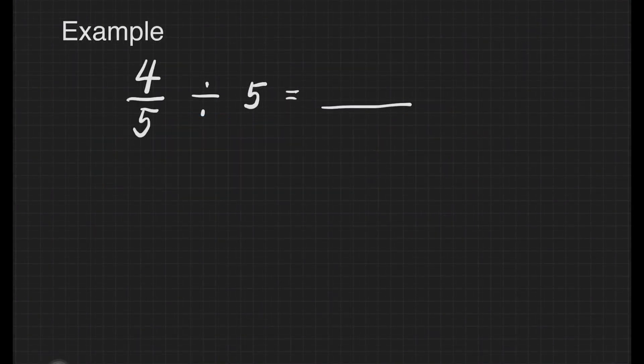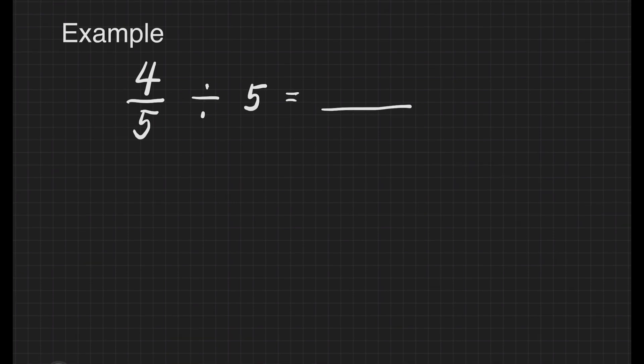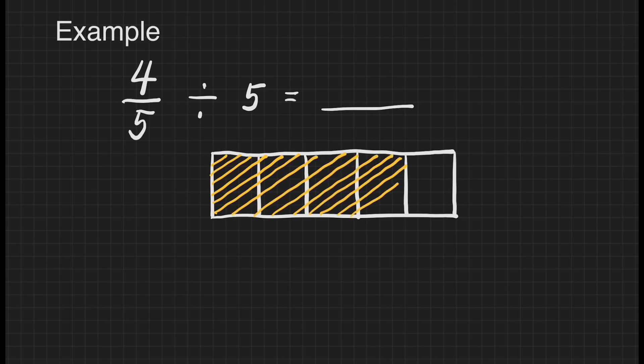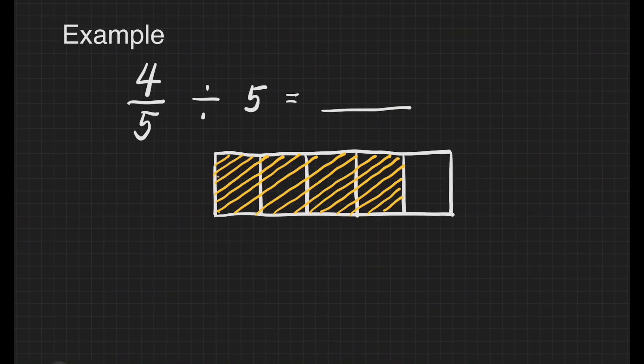We have another example here. 4 fifths divided by 5 is equal to blank. The first thing we should do is to draw a box and then we'll represent 4 fifths. Let's divide this box into 5 equal parts and then let's shade 4 parts. Let us just wait until I am done shading this and this is our 4 fifths.